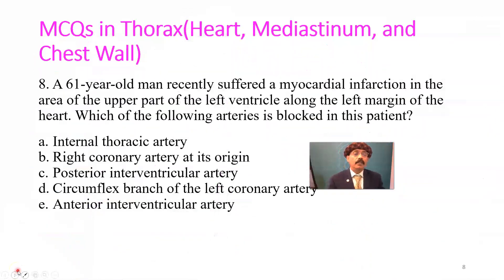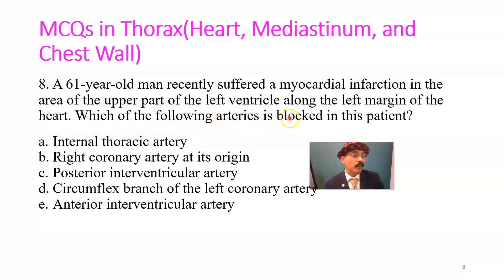Question number eight: a 61-year-old man recently suffered a myocardial infarction in the upper part of the left ventricle along the left margin of the heart. Which artery is blocked? Choices are: A) internal thoracic artery, B) right coronary artery at its origin, C) posterior interventricular artery, D) circumflex branch of the left coronary artery, E) anterior interventricular artery. Answer is D, circumflex branch of the left coronary artery.